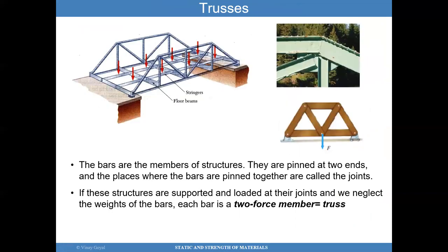Here's an example of a truss structure. Truss structures are typically structures where the bar has two ends which are pinned. At these locations where they're pinned together, we call them joints. For example, there are three trusses that come together at a joint. Typically, these are idealizations of more complex structures where you have trusses that could be welded, bolted, or may have rivets that bring them together.